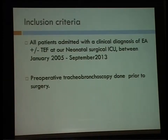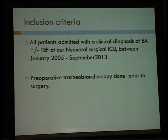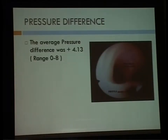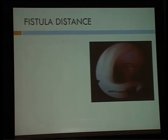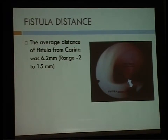We included all patients from January 2005 to September 2013, and we did a preoperative laryngotracheobronchoscopy in all these patients prior to surgery. We found that the average pressure difference was plus 4 cm of water, ranging from 0 to 8. The average distance of the fistula from the carina was 6.2 mm, ranging from minus 2 to plus 15. Minus 2 meaning that it is distal to the carina, that is subcarinal.